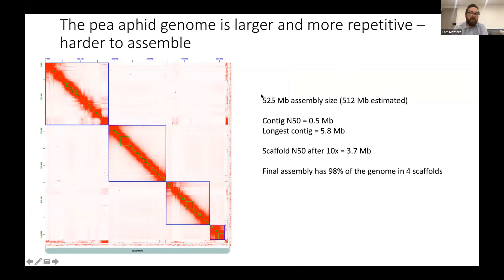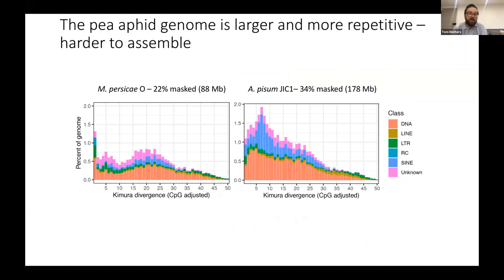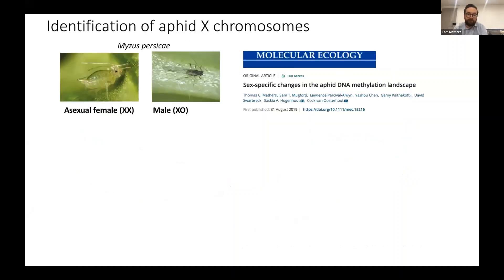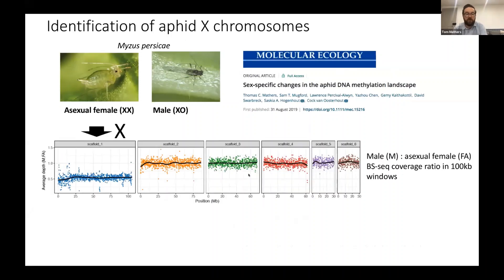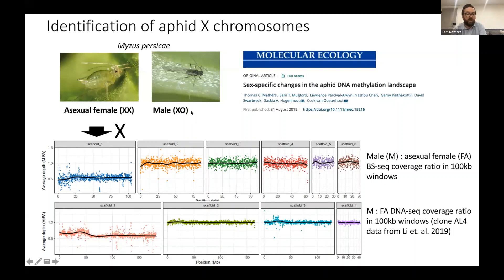We also generated an assembly of the pea aphid, which is a larger genome at 500 megabases. It doesn't assemble quite as well with a 500 kb N50. We used 10x data to scaffold this and then subsequently scaffolded it with Hi-C data into four chromosomes, which contain 98% of the genome assembly. We're able to identify the X chromosome in these assemblies using patterns of coverage across the genome in males and females — males have a single copy of the X, females have two copies — and scaffold one in both assemblies corresponds to the X chromosome with approximately half the coverage of the autosomes in males versus females.